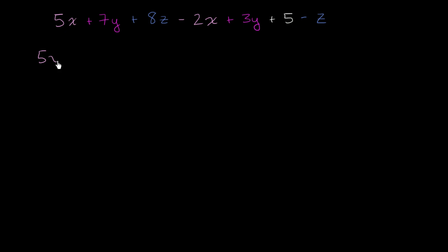So I have 5x, that's that term, minus 2x. Then I have plus 7y, plus 3y. Then I have plus 8z.